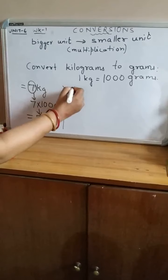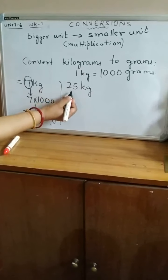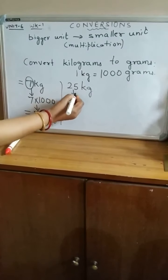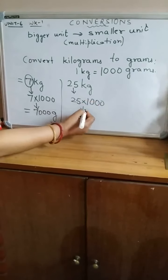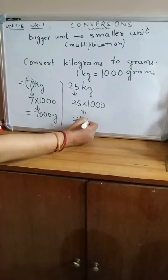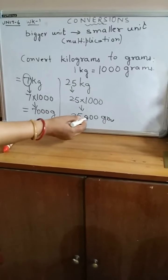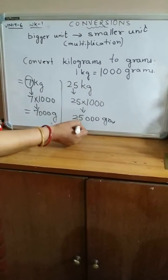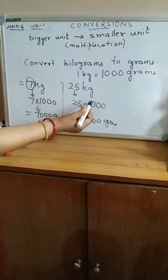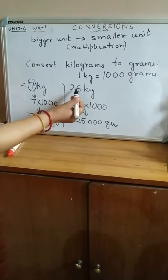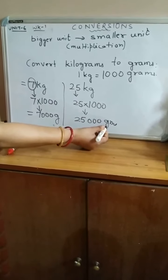Similarly, 25 kilograms. The number of kilograms, that is 25, will be multiplied by 1000. So after multiplication, 25 kilograms becomes 25,000 grams. By multiplying the number of kilograms by 1000, we get 25,000 grams.